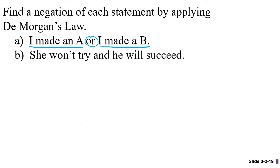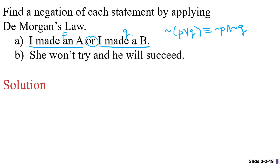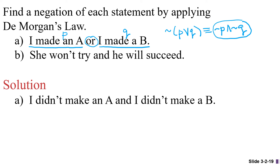So what we're trying to establish is what would be the negation of that situation. DeMorgan's law for negating a disjunction — an or statement — says a negation of P or Q is equivalent to negation P and negation Q. So if I think of 'I made an A' as the statement P and 'I made a B' as the statement Q, then we have something of the form P or Q that we're trying to negate. And so we can write the negation as not P and not Q, which would be: I didn't make an A and I didn't make a B.